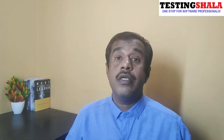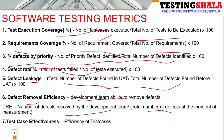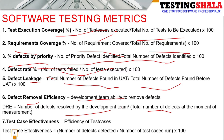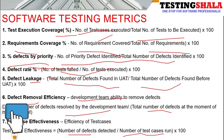The seventh metric is test case effectiveness — whether your test cases can really find issues. The formula is: total number of defects identified divided by number of test cases executed. For example, if I identify 10 defects from 100 test cases executed, the test case effectiveness is 10%.